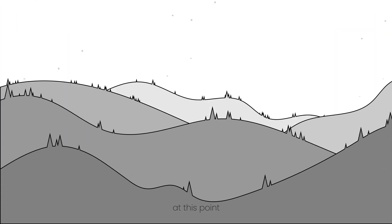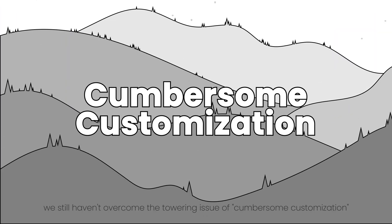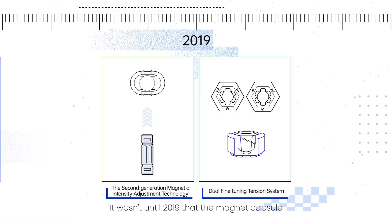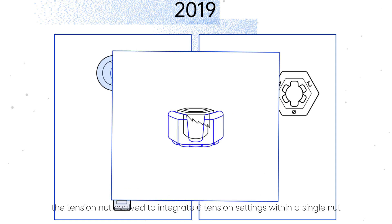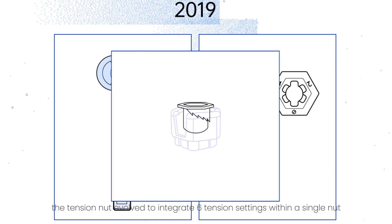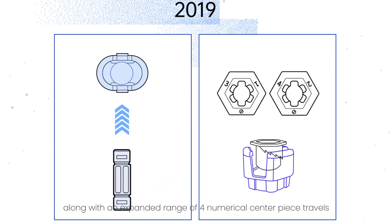However, at this point, we still haven't overcome the towering issue of cumbersome customization. It wasn't until 2019 that the magnet capsule evolved into the smooth magnetic capsule, enabling three-level magnet adjustment with just a swipe of finger. As for tension, the tension nut evolved to integrate six tension settings with a single nut, along with an expanded range of four numerical centerpiece travels.